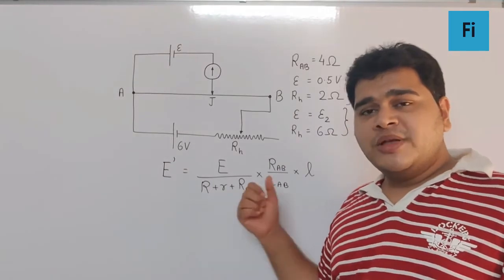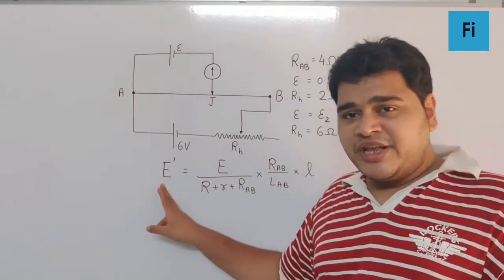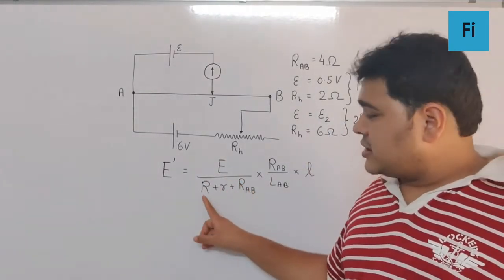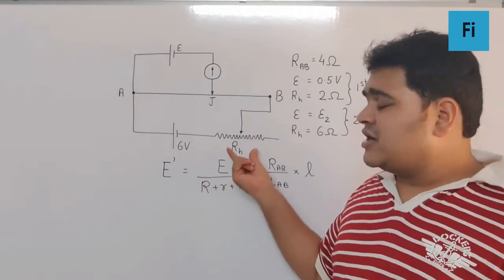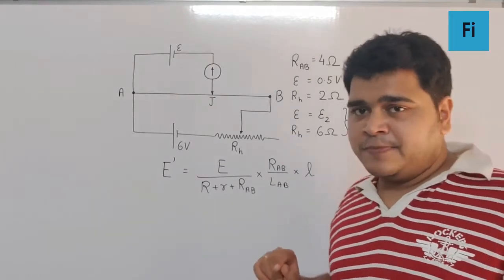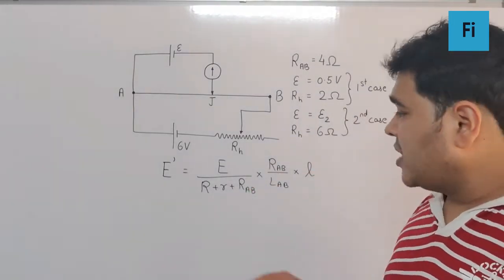If I take the two cases, E' is changing from 0.5 to E2, and R, the external resistance which here is R_H, is changing from 2 to 6. That is the only change, which means if I take the two cases and take the ratio of it...